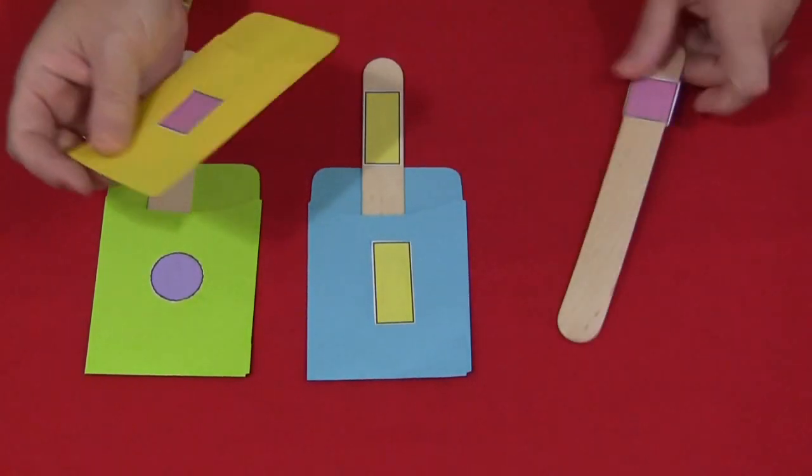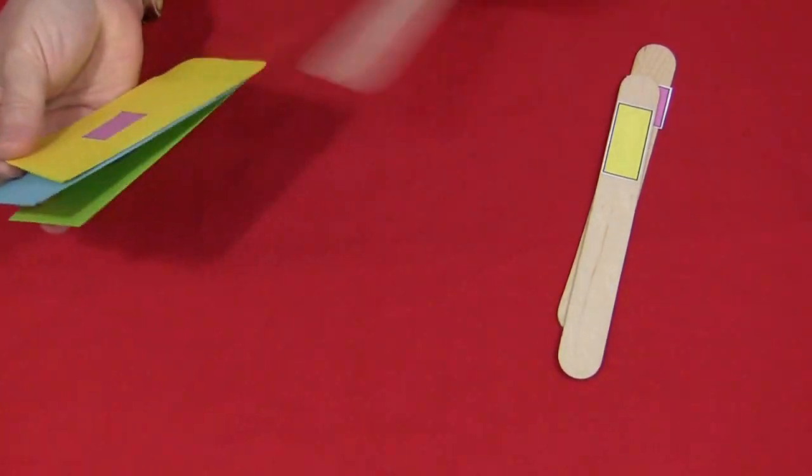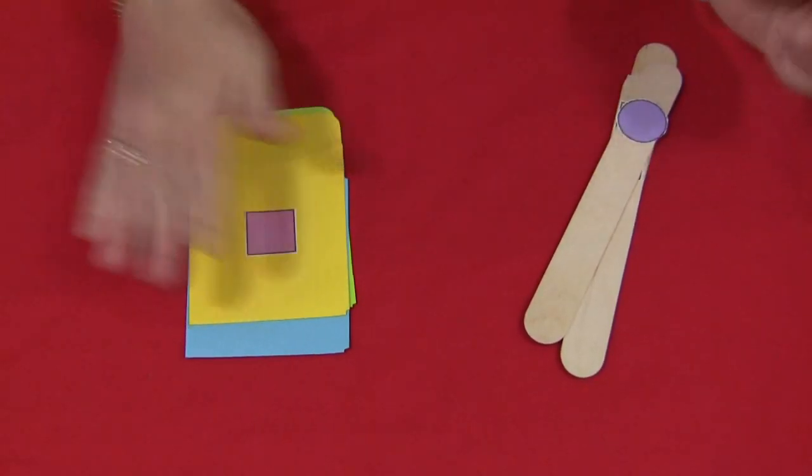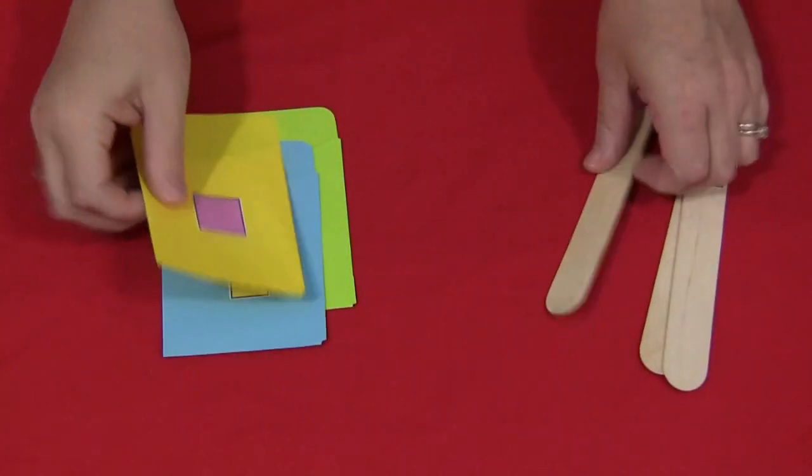What the children would do is these would be separated. You would have the craft sticks in one pile and your library pockets in another pile and the children would need to find the correct match.